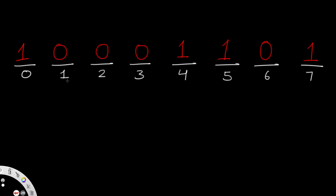We're going to iterate through our seats until we come across a seat which is taken. In this case, the first seat that is taken is at index zero. We're going to store that value in a temporary variable — let's call it temp — and the value we store is the index at which we found the current taken seat, which is zero.